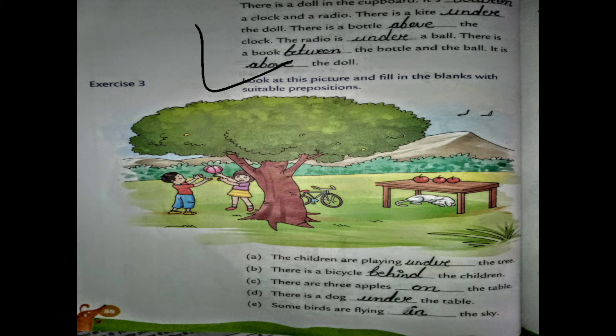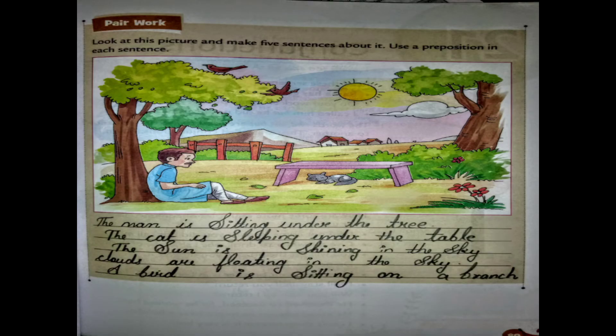Exercise 3 is similar. Look at the picture and fill in the blanks with the suitable preposition. For example: 'The children are playing under the tree.' 'There is a bicycle behind the children' — behind means at the back. 'There are three apples on the table.' 'There is a dog under the table.' 'Some birds are flying in the sky.'